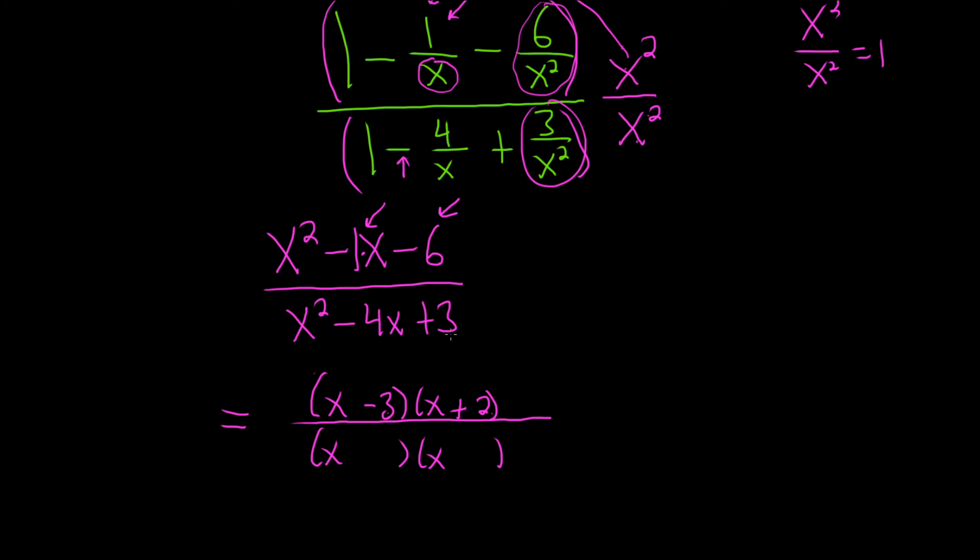On the bottom, we need two numbers that multiply to 3 and add to negative 4. So I'm thinking 1 and 3. And if they're going to add to negative 4, they both must be negative. Oh, look at that. The x minus 3s go away. How nice. I love this. This is x plus 2 over x minus 1. What an awesome problem. And that would be the final answer. I really like these problems. Most people probably don't, but let me tell you, this is good stuff. That's it.